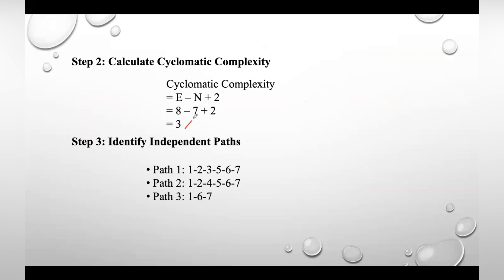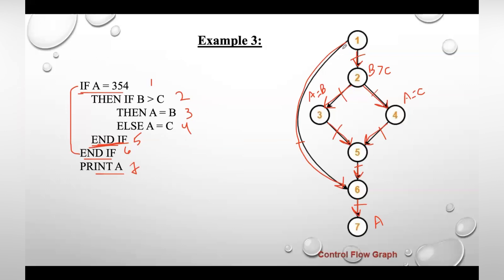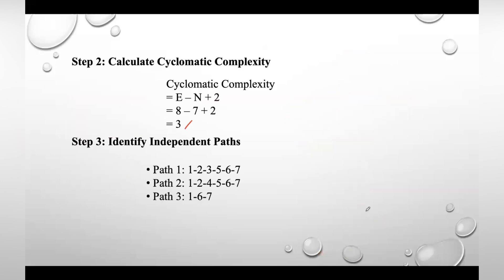Before that identify independent paths. What are the paths? We can have direct path from one to six, six to seven. So that is nothing but path three. You need to include both the start and end nodes here in this path.